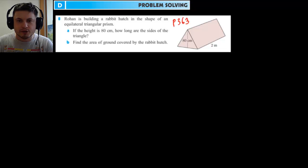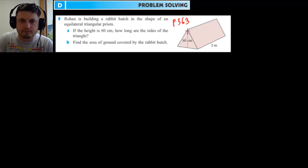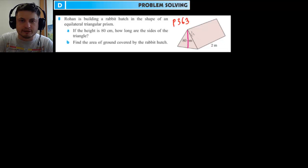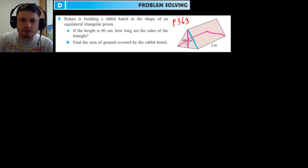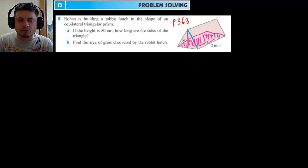We only know one thing: the height of this object is 80 centimeters. We need to do two things — first, find the length of the sides, and then find the area of the ground covered by this rabbit hutch. So we need to find the area and also the length of the side.